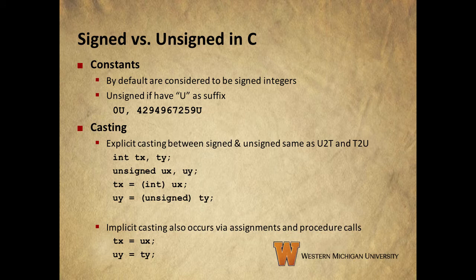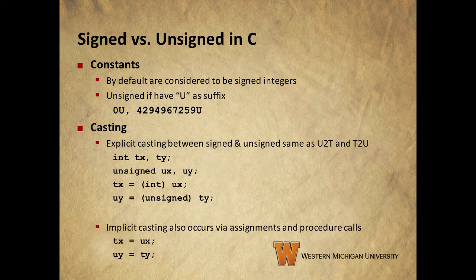Let's cover how signed and unsigned integers work in C. By default, integers are considered to be signed. We append a suffix of U to specify that we want an integer to be unsigned. Explicit casting between signed and unsigned works just like our U2T and T2U functions. Please try these lines of code in a little C program of your own just to see what it looks like. Implicit casting can also happen in assignments and procedure calls — try some of these on your own to investigate.